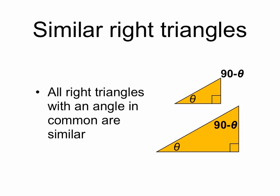We note that all right triangles with an angle in common are similar. So here we have two triangles — they're different sizes — but we assume that both of them have the same angle theta. They're similar because the third angle has to be 90 minus theta, since the sum of the angles in the triangle has to be 180 degrees.